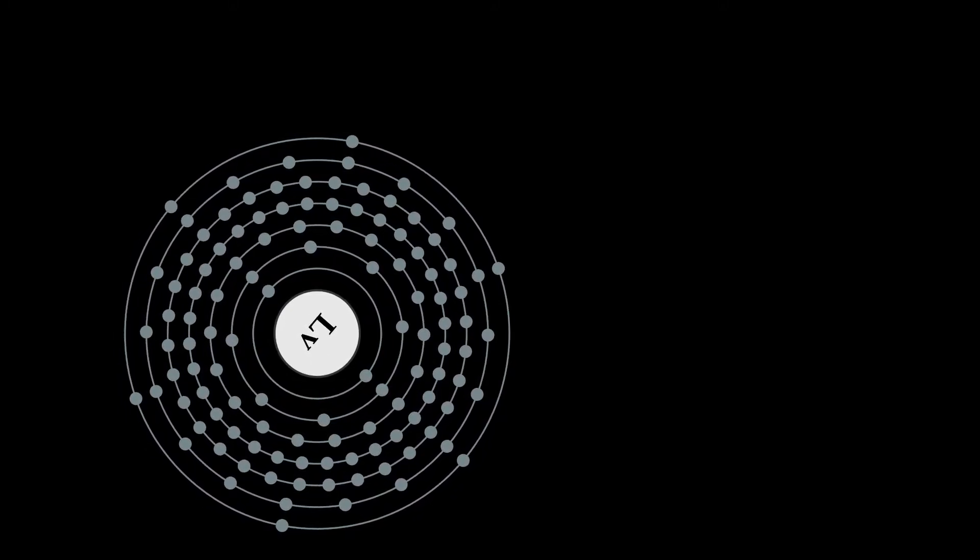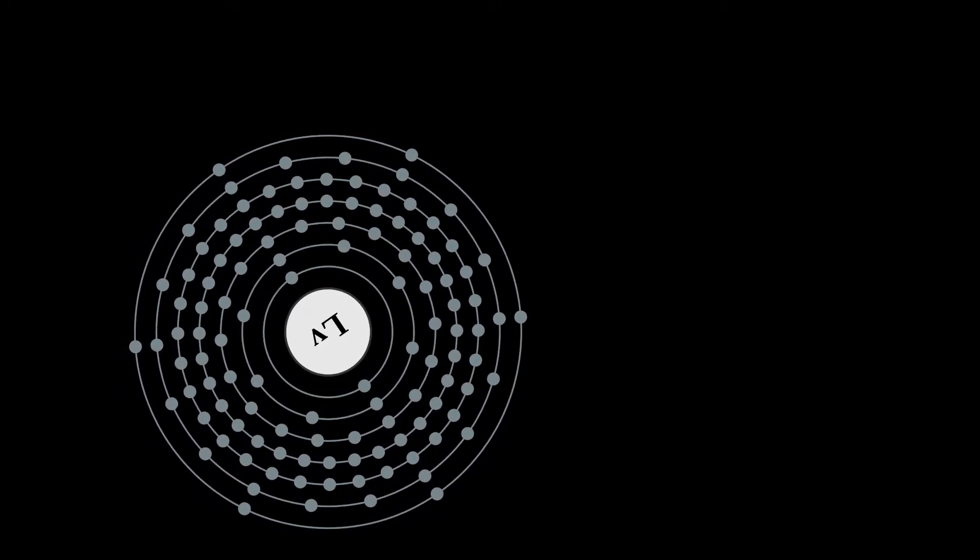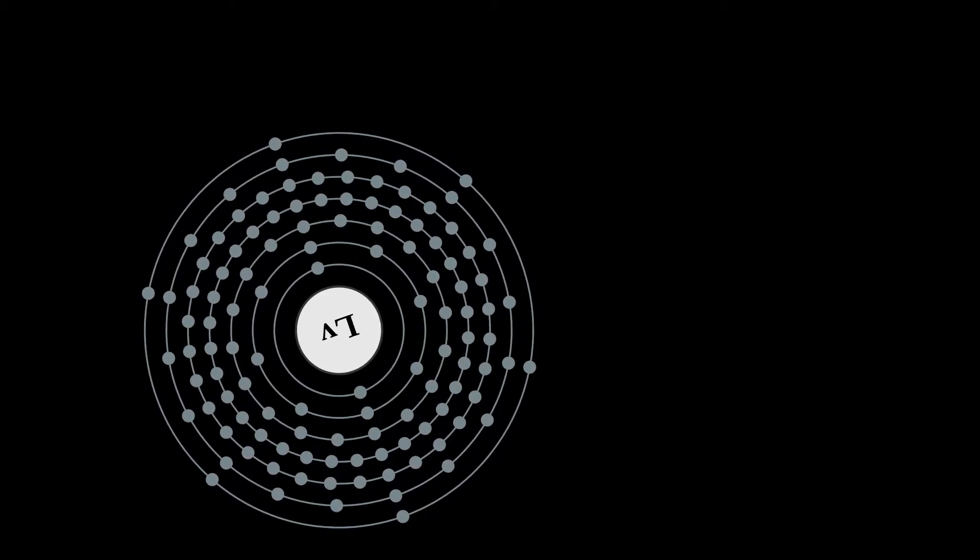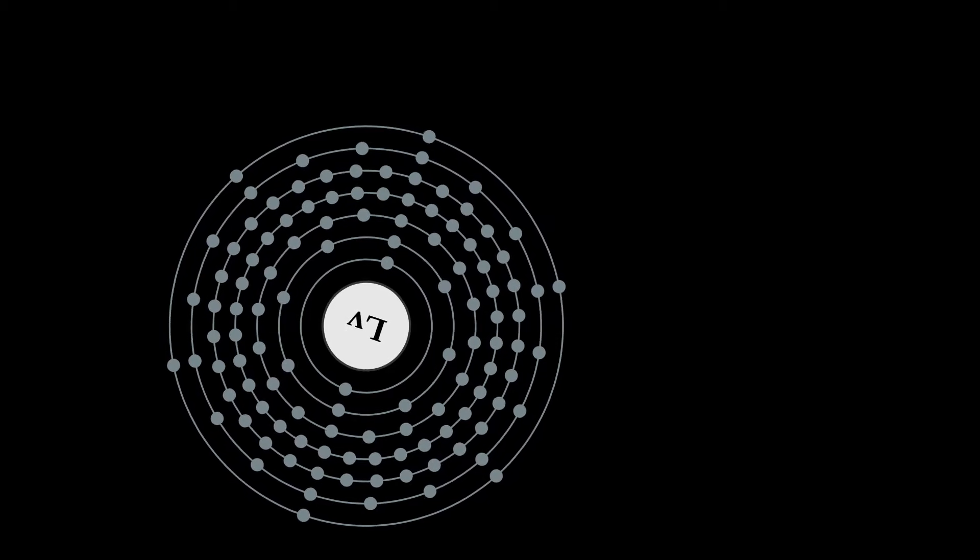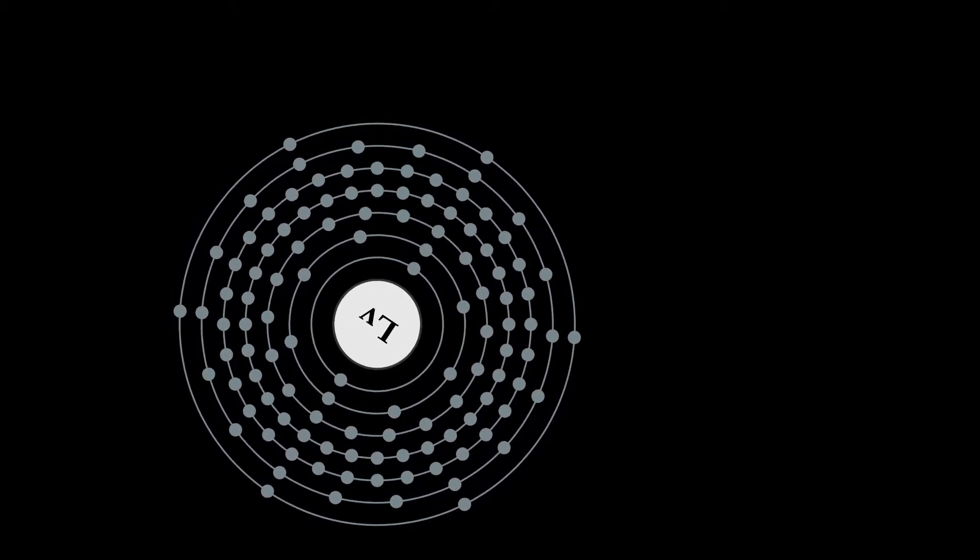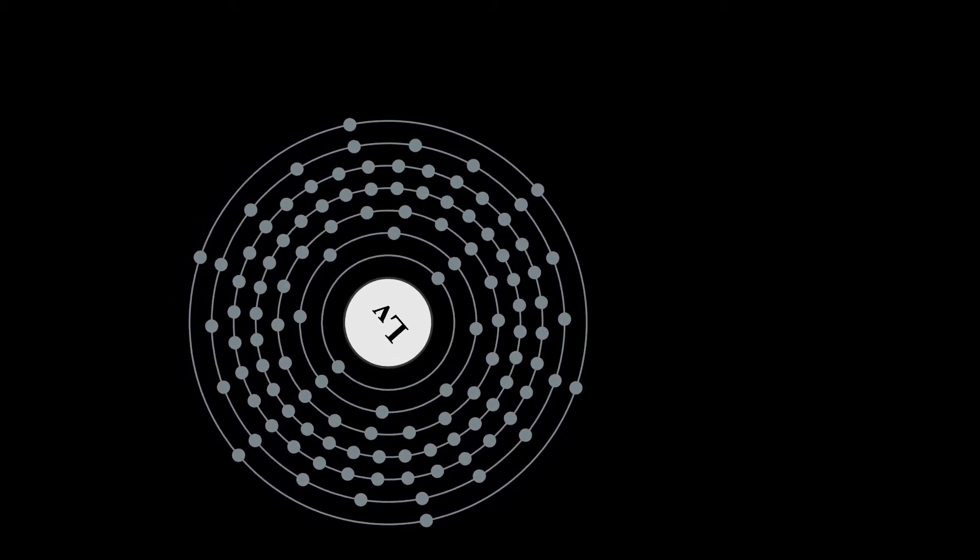In the periodic table, it is a P-block transactinide element. It is a member of the seventh period and is placed in group 16 as the heaviest chalcogen, although it has not been confirmed to behave as the heavier homologue to the chalcogen polonium.